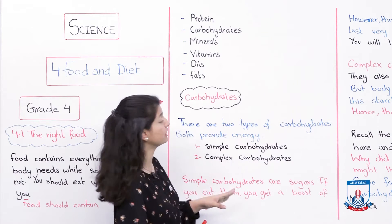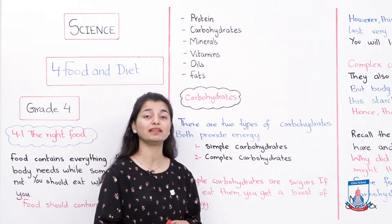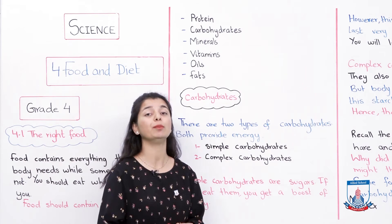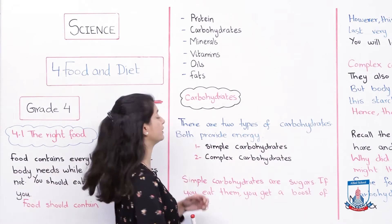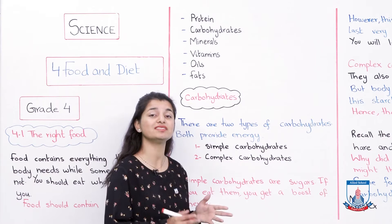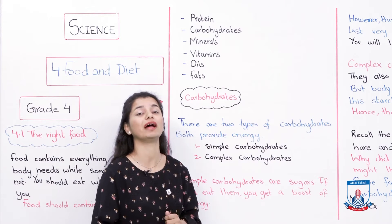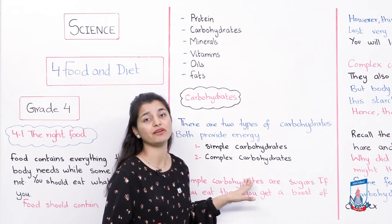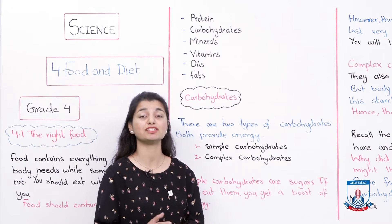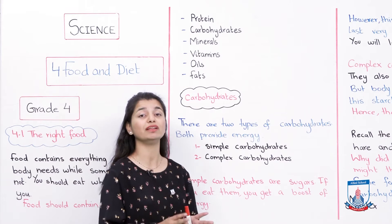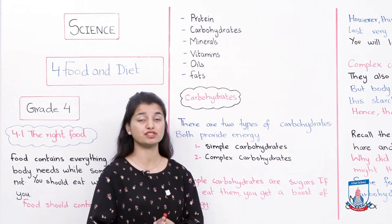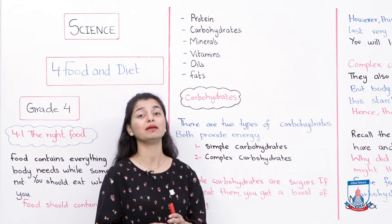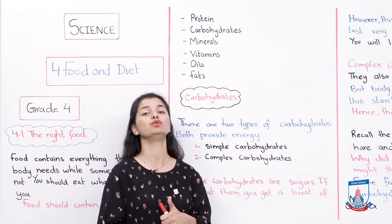There are two types of carbohydrates. Both provide energy, but it depends on which type — they give you more or less energy. The two types are: first, simple carbohydrates — they are simple and easy for your body to digest. The other is complex carbohydrates, which are a little more difficult for your body to digest. Carbohydrates are one main source of energy, and they come in these two types: simple and complex.